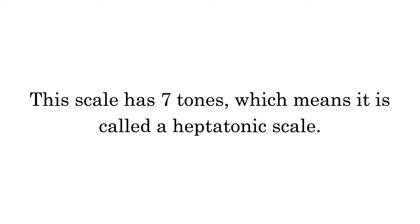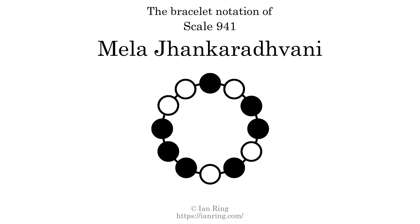This scale has 7 tones, which means it is called a heptatonic scale. This is a bracelet notation diagram of scale 941. The shaded circles represent tones that appear in the scale, and they are read clockwise, starting at the top.